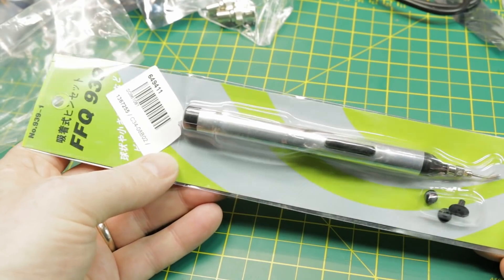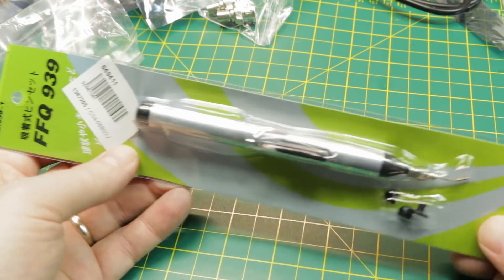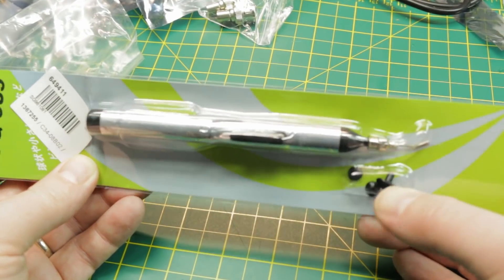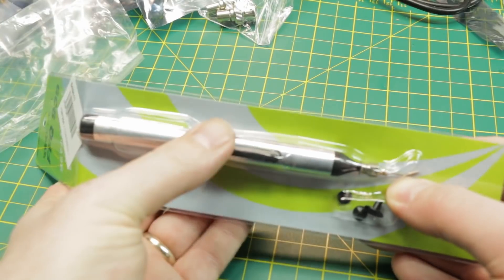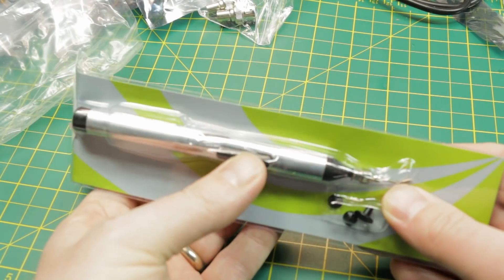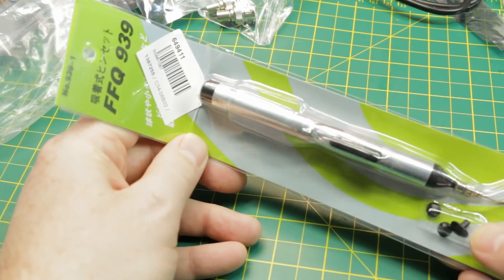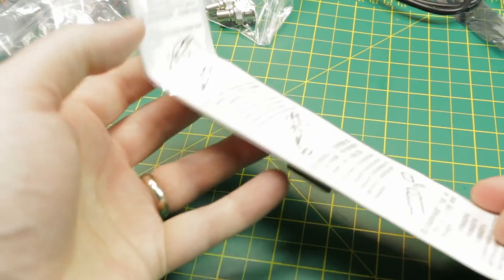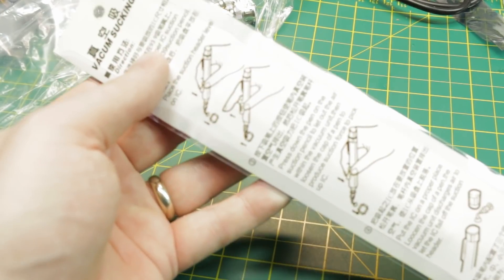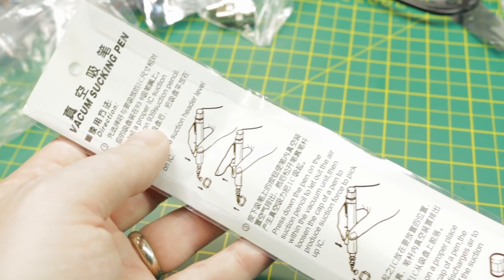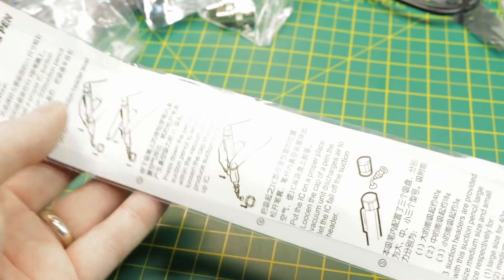Another vacuum pickup tool for SMD components. This is much similar to the one we just looked at. It has some kind of rubber feet for it and a little vacuum pen. We're going to give it a try on the 0805 and 0603 components. See how it works. I have no idea how well it's going to work to be honest, but they market it as a vacuum sucking pen.